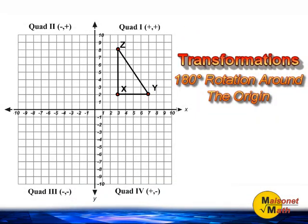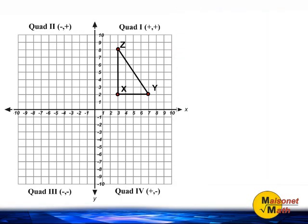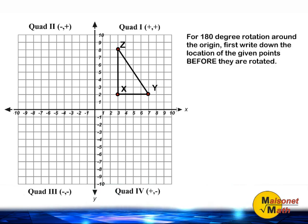In this tutorial, we are going to rotate triangle XYZ 180 degrees around the origin. For any 180 degree rotation around the origin, you should first write down the location of the given points before they are rotated.